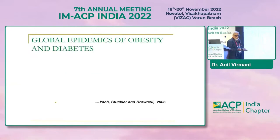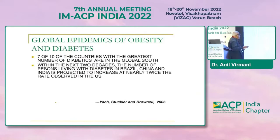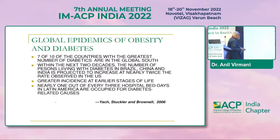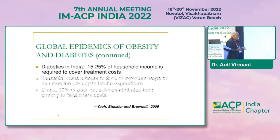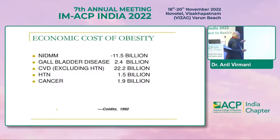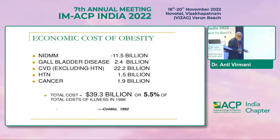Let me give you an example of obesity and diabetes, because they both go together. Seven out of ten countries with the greatest number of diabetics are in the global south. There is greater incidence at earlier stages of life, and nearly one out of every three hospital bed days is occupied for diabetes-related causes. In India, 15 to 25% of household income is required to cover treatment costs. The total economic cost of obesity: patients with diabetes — $11.5 billion, gallbladder disease — $2.4 billion, cardiovascular — $22 billion, hypertension, cancer — the costs keep adding up to around $40 billion.